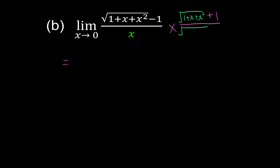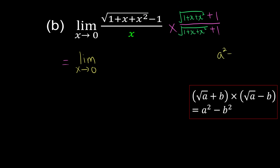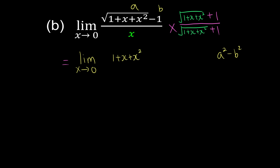We multiply both numerator and denominator by the conjugate to be fair. Then we simplify, keeping the limit of x approaches 0. When you multiply by the conjugate you get a² minus b² — a shortcut. So a squared: the square of the square root gives 1 plus x plus x squared. b is 1, so 1 squared is just minus 1.